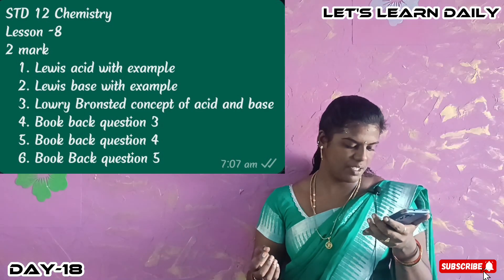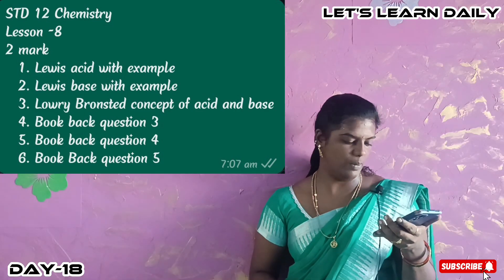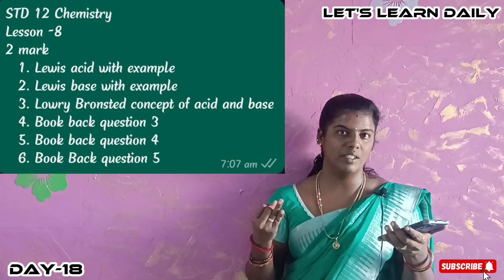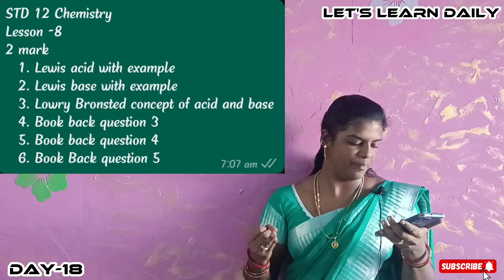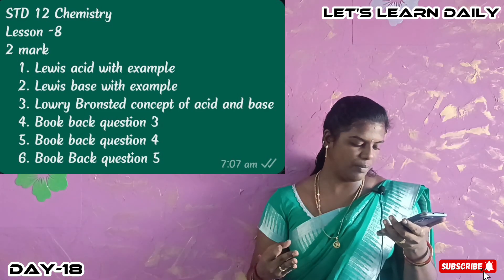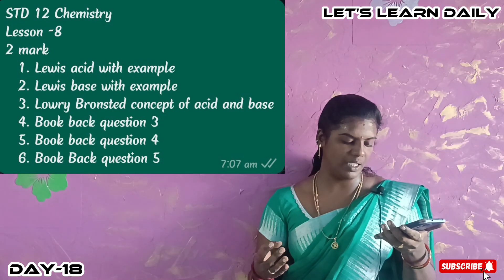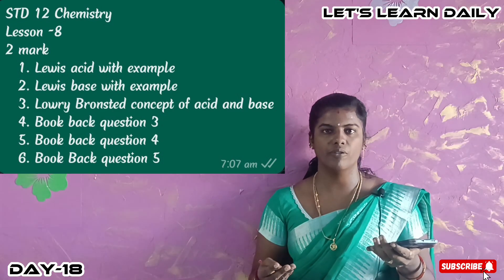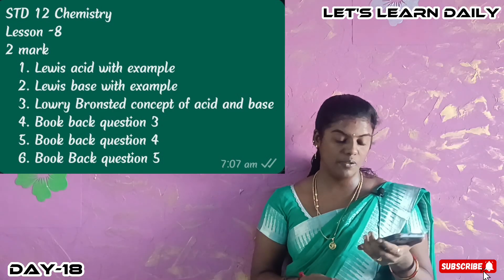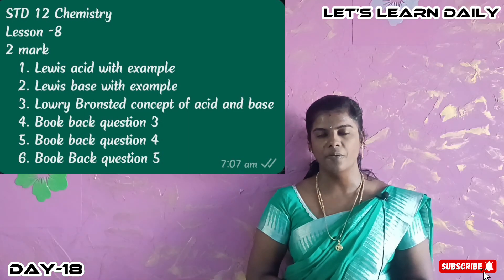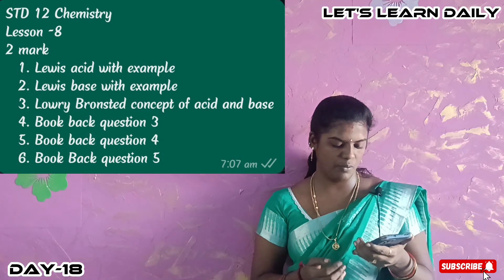Next is 12th chemistry. In 12th chemistry, lesson 8, the 2 mark questions cover: Lewis acid with example, Lewis base with example, Lowry-Bronsted concept of acid and base, and bookback questions 3, 4, and 5. You will start with Lewis acid and base.